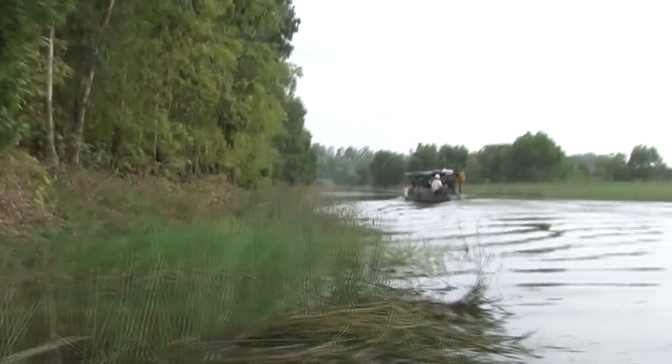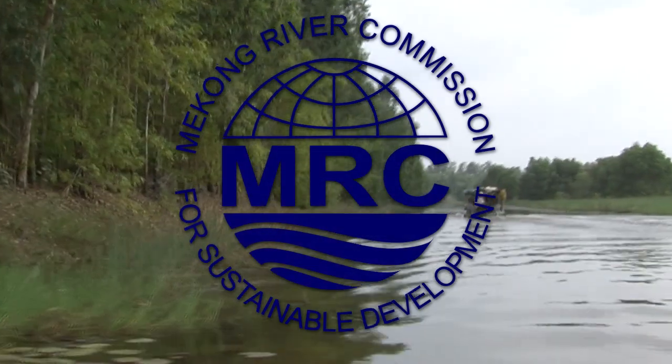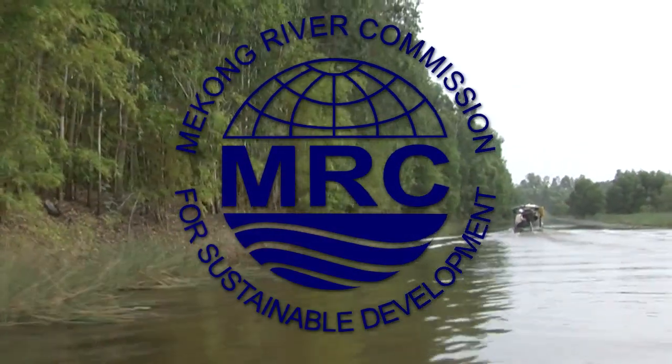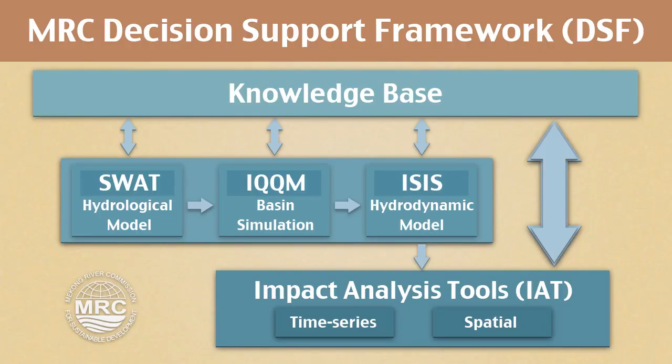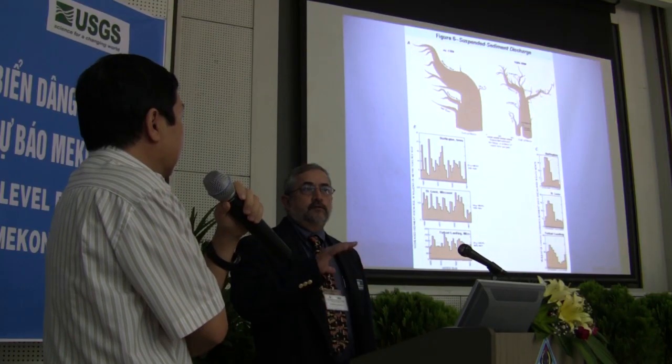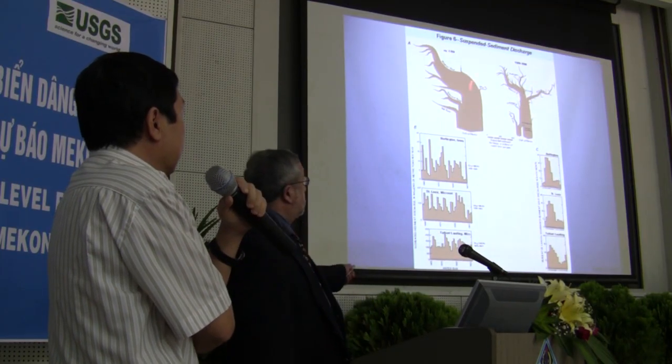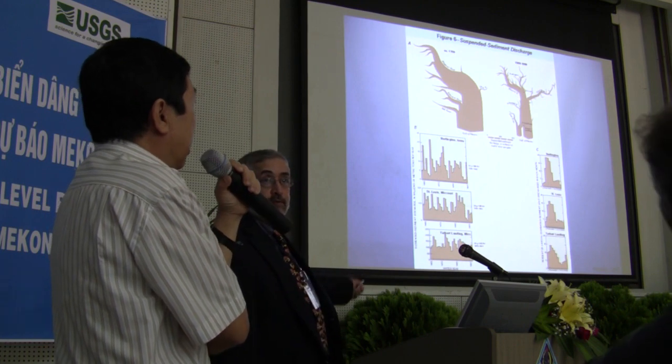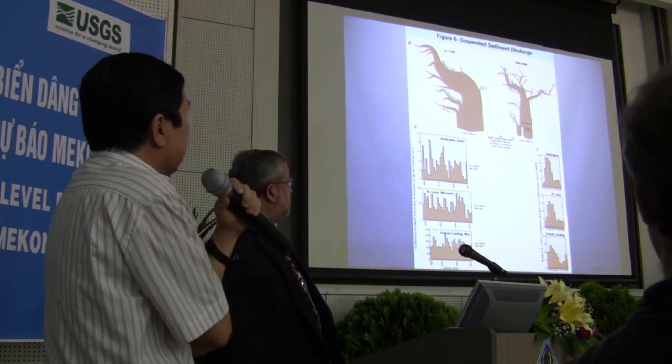The Mekong River Commission, or MRC, has developed a suite of hydrology models within a decision support framework to forecast changes in river flow and water quality from proposed development projects such as dams. The U.S. Department of State, in cooperation with the U.S. Geological Survey and university partners, are developing visualization tools to help policymakers and planners communicate and evaluate complex river issues.